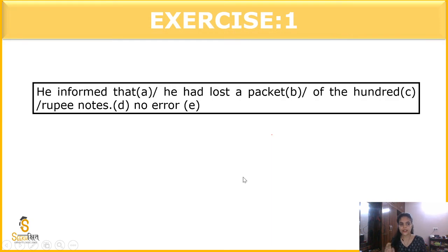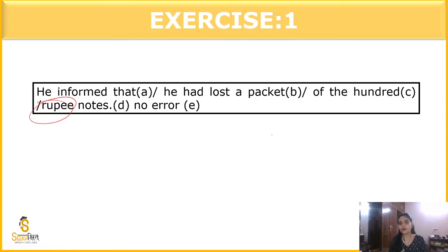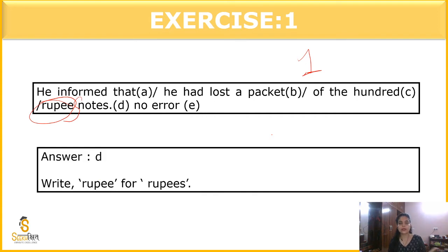The next question: 'He informed that he had lost a packet of the hundred rupee notes.' Some words are always plural — for example, 'rupees' is always plural when referring to more than one. So the error here should be replaced with 'hundred rupees note.' Similarly, 'information' is always plural — never 'informations.'